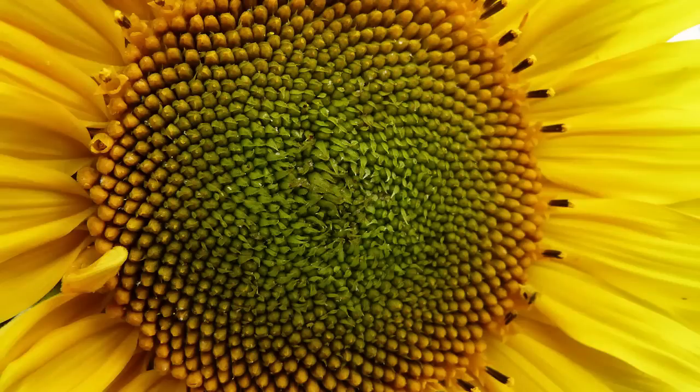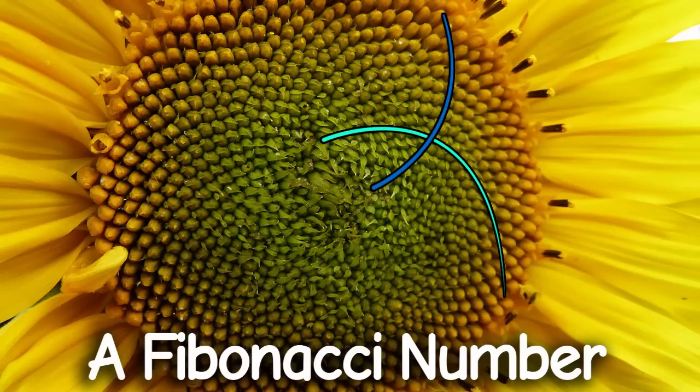To add more, the number of these spirals is always, in either ways, a Fibonacci number. This is because the number of spirals that the eye sees cannot be irrational. It has to be a natural number.